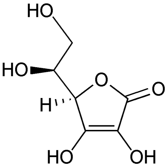Photosynthesis involves the reduction of carbon dioxide into sugars and the oxidation of water into molecular oxygen: 6CO2 + 6H2O + light energy → C6H12O6 + 6O2. The reverse reaction, respiration, oxidizes sugars to produce carbon dioxide and water. As intermediate steps, the reduced carbon compounds are used to reduce nicotinamide adenine dinucleotide (NAD+) to NADH, which then contributes to the creation of a proton gradient, which drives the synthesis of adenosine triphosphate and is maintained by the reduction of oxygen. In animal cells, mitochondria perform similar functions.